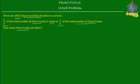What's important here is the relation between the number of Class A seats and the number of Class B seats. What we do know from the problem statement is that two-thirds of the total number of Class A seats is equal to one-quarter of the total number of Class B seats.